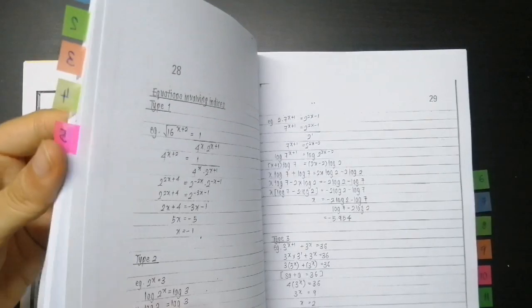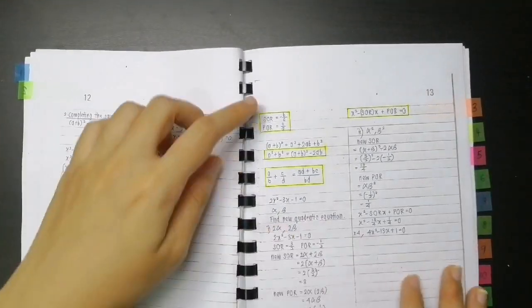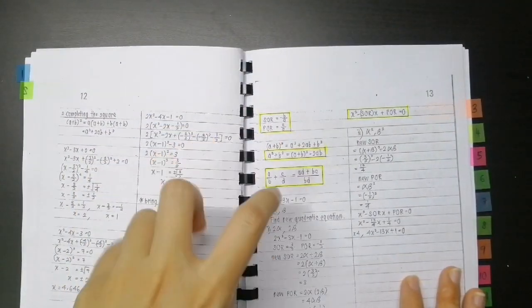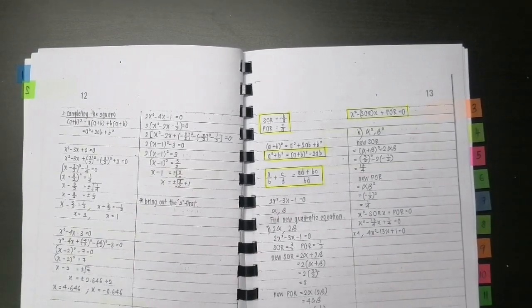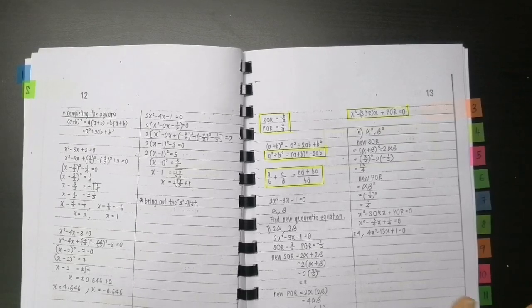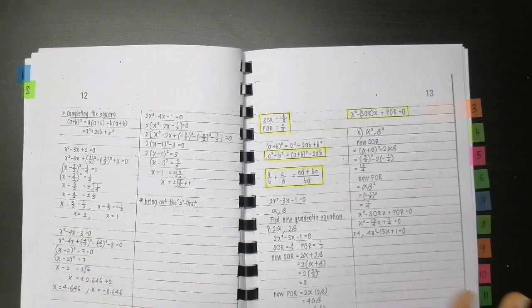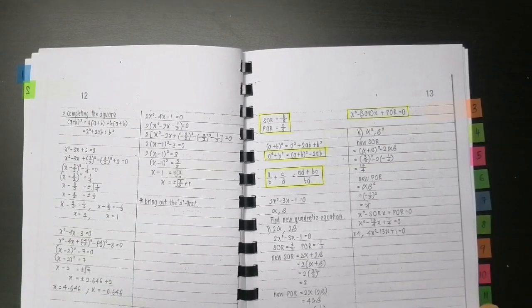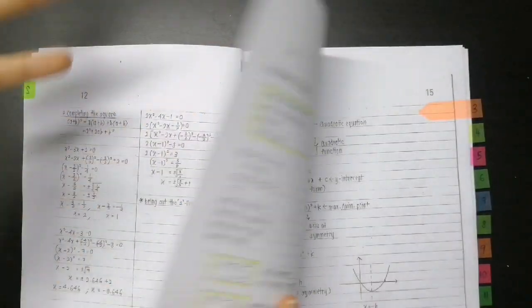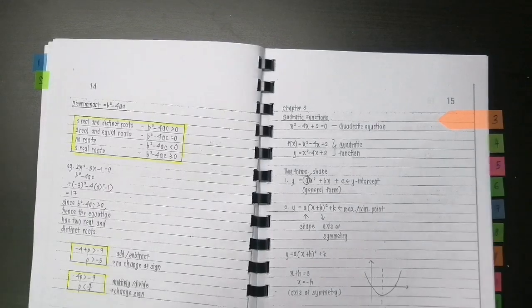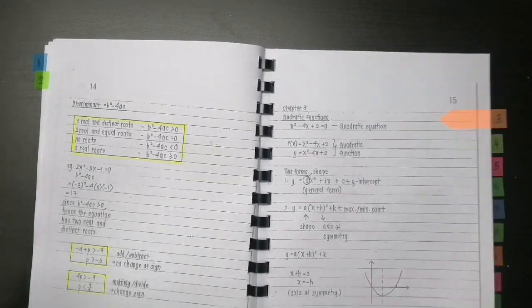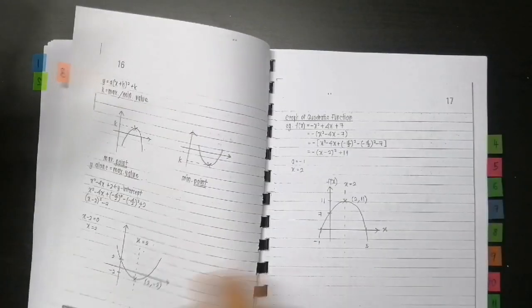And something which I did was also to highlight every single important formula because in my last video, I actually said that I put red brackets around all the important formulas so it is easy to identify them. And then in the black and white version, I decided to highlight everything so you would really be able to identify the important formulas.